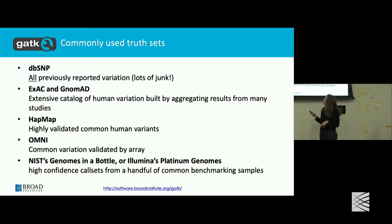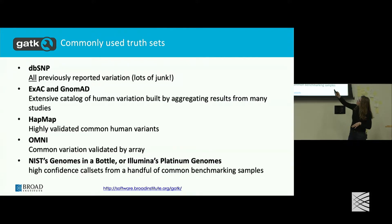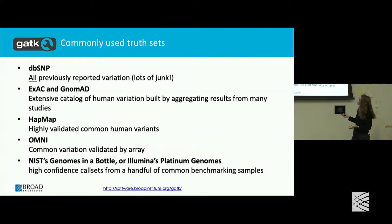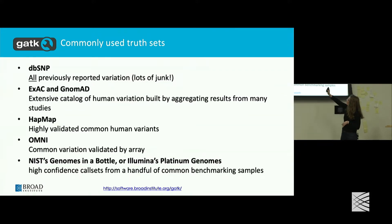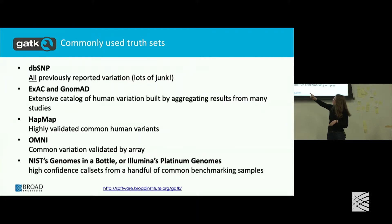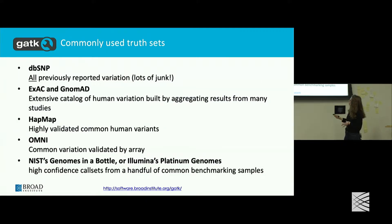So these are a bunch of different resources. dbSNP has a lot of noise — it's sort of where you can go if you can't find it somewhere else. gnomAD and NOMAD are an extensive catalog of exomes for gnomAD, and then for NOMAD it's additional genome information. For the bottom three, those are the ones that we tend to use — they're really great public resources.